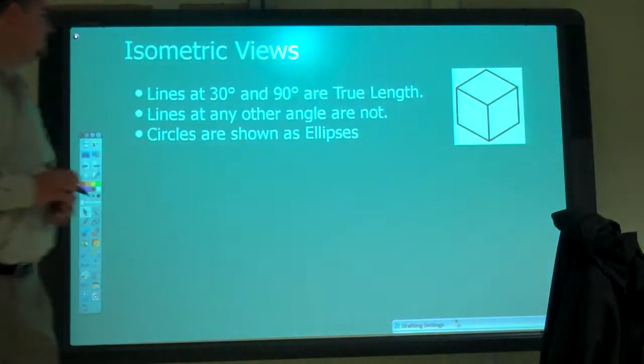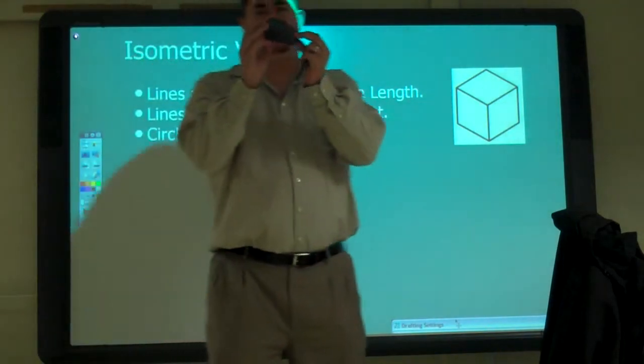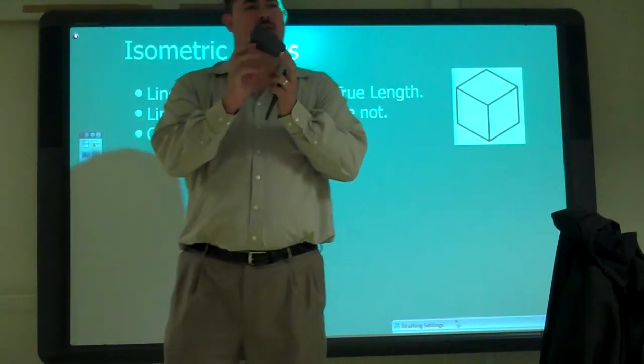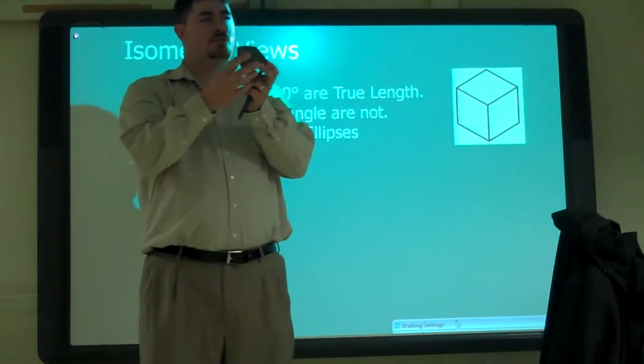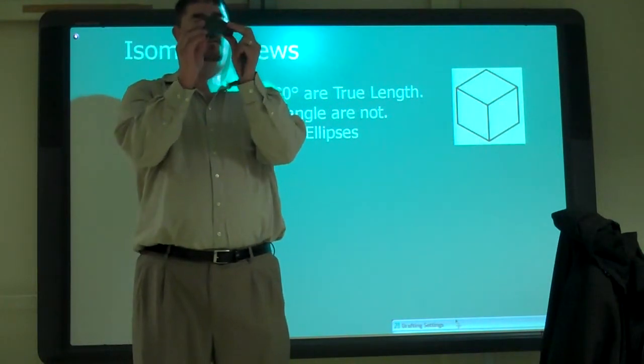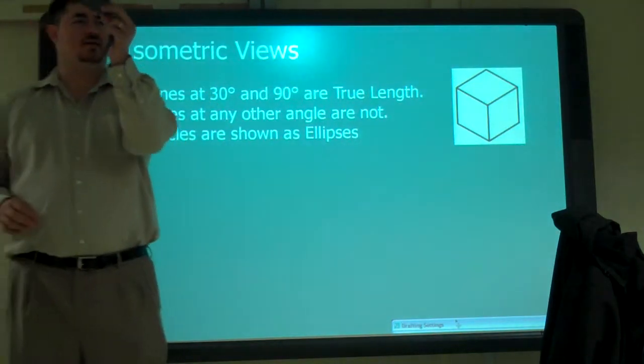Today we're going to talk about isometrics. Isometric is when we're looking at the object from the corner. What's the benefit of looking at it like this? You can measure it. With isometrics you can measure it, but what's better than that? You can see the whole part. You can see three sides at once, right?